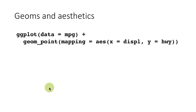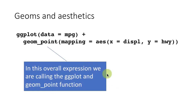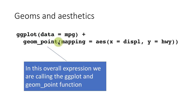In the overall expression, we are calling the ggplot function and the geom_point function — two function calls. This is the general structure of any ggplot plot. First you call the ggplot function and indicate what data you're going to use. Then you call one or more geoms. In this example, we are calling just one geom, and we keep stringing each geom and everything we are adding with a plus sign.